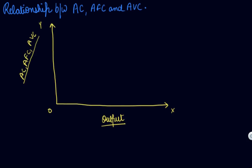In this video, we will understand the relationship between your total average cost, your average fixed cost, and your average variable cost. We have seen in our previous video that your average fixed cost is a rectangular hyperbola — it looks like this. Average fixed cost, right?